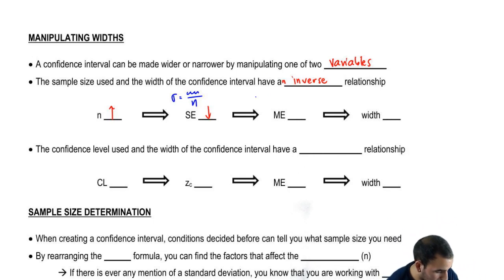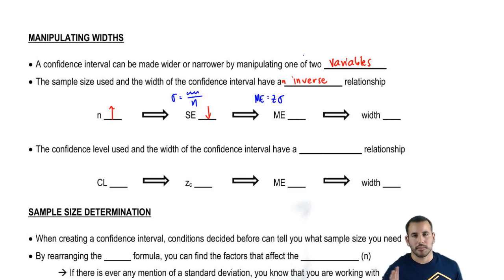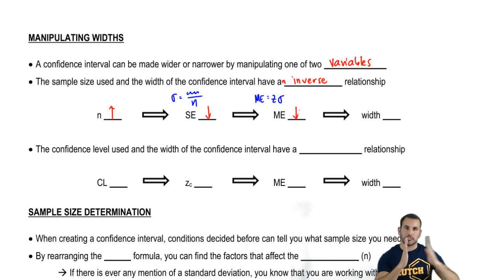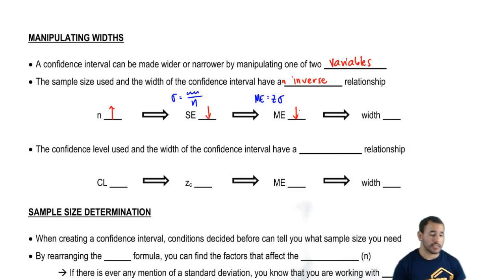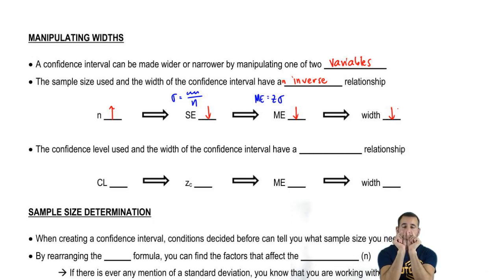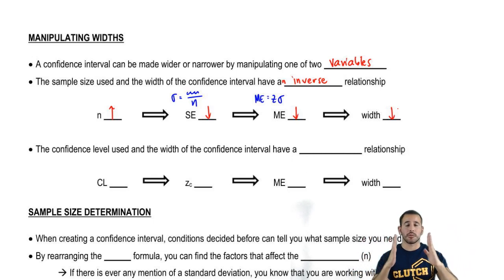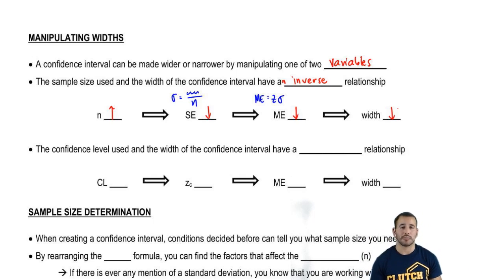Now, because of that, what happens to margin of error? Margin of error is z times the standard error. As the standard error goes down, the margin of error also goes down. And since the margin of error goes down, that tells you how wide on each side the confidence interval is going to be — how much you're going to span above and below the point estimate. So the width goes down as well; a smaller margin of error means the confidence interval gets narrower. As you increase sample size, your margin of error gets smaller because you're more accurate — closer to the actual parameter. A sample size of 30 is not as good as a sample size of 1,000.